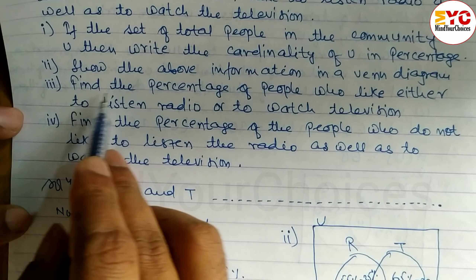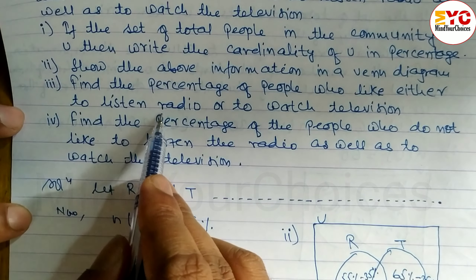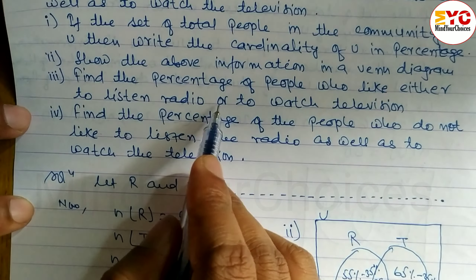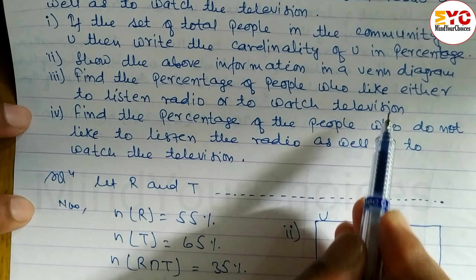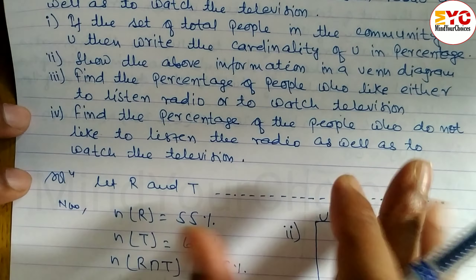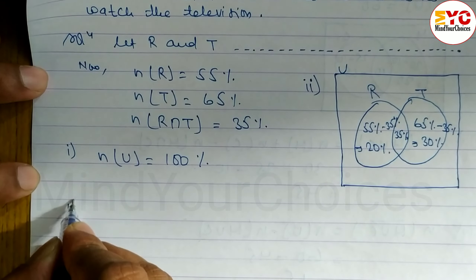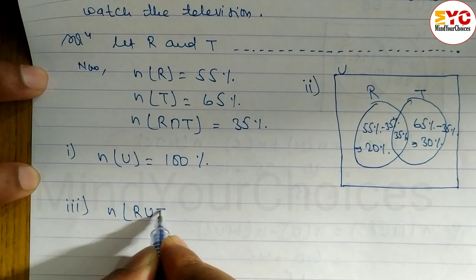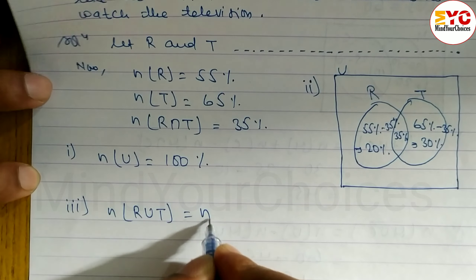Number 3: Find the percentage of people who like either to listen to radio or to watch television. 'Either or' means union. Formula: n(R ∪ T) = n(R) + n(T) − n(R ∩ T) = 55% + 65% − 35% = 85%. So 85% of the community likes either radio or television or both.